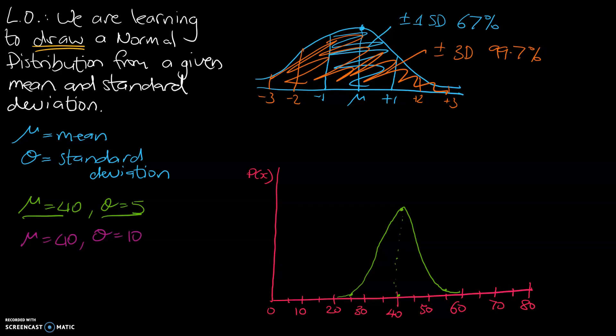So the idea of standard deviation being 10 is now minus 1, minus 2, and minus 3. That means the lower limit is at 10, and we've got plus 1, plus 2, and plus 3. That means the upper limit is at 70.